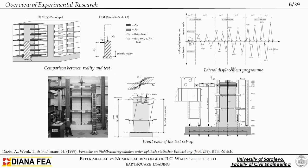The actuator could apply displacement on the wall in both directions. Here we can see an example of one lateral displacement program used on one of the walls — displacement applied in one direction then the other, increasing as the test progressed. In the research, they tested various parameters and monitored many things. We concentrated on the force-displacement curves, monitoring the force at the actuator and the wall displacement to form these curves. They also monitored cracks, which we looked into as well.